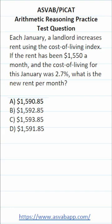This arithmetic reasoning practice test question for the ASVAB and PiCAT says each January a landlord increases rent using the cost of living index. If the rent has been $1,550 a month and the cost of living for this January was 2.7 percent, what is the new rent per month?